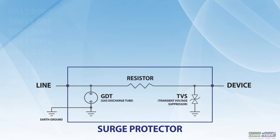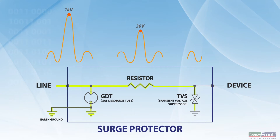Surge protectors often come with three stages of surge protection: gas discharge tubes (GDT), protection resistors, and transient voltage suppressors (TVS). When a high voltage surge is introduced into the input, the GDT conducts electrical current after becoming ionized, which in turn discharges the high voltage surge to the earth ground. The excessive voltage will be further clamped to a safe range that the equipment can accept by the TVS.